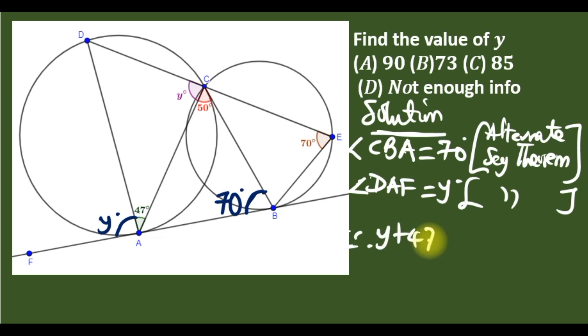y plus 47 degrees must equal 50 degrees plus 70 degrees, which equals 120 degrees. Subtracting 47 from both sides, y equals 73. The answer is option B, 73.